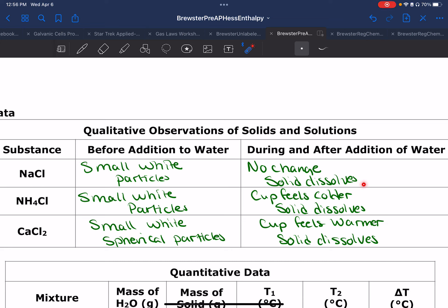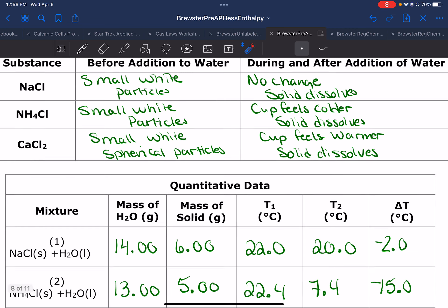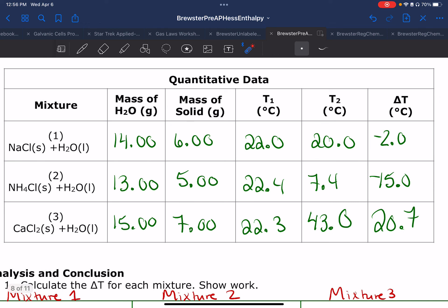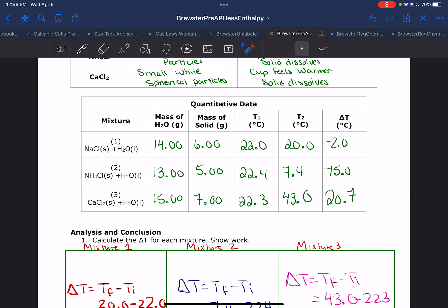NH4Cl, kind of surprised some of you that it actually decreased in temperature. And then calcium chloride was the warmest. This is just my data. It's not necessarily has to be your data, but in case you need data, there's data there for you.